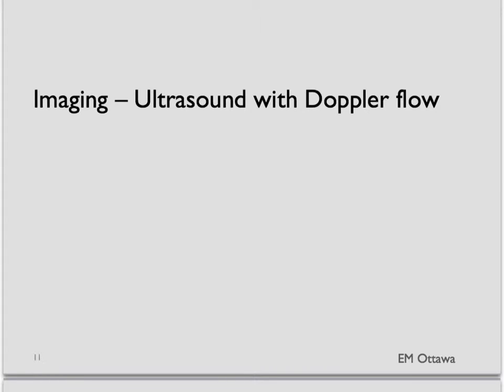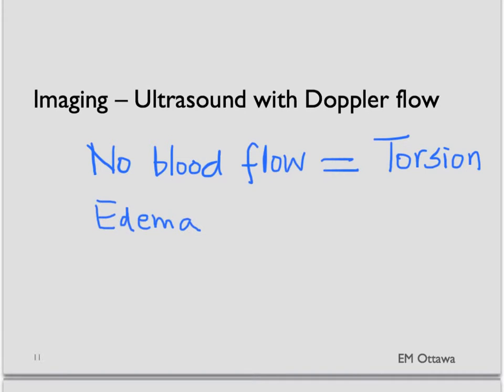The ultrasound with Doppler flow measurement is the test for ovarian torsion. The lack of blood flow establishes the diagnosis. They may also sometimes see the ovarian mass, cysts, or edema on the ultrasound as well.